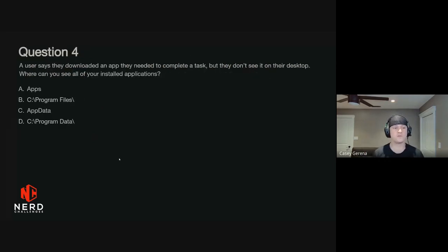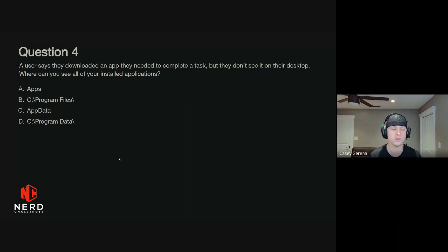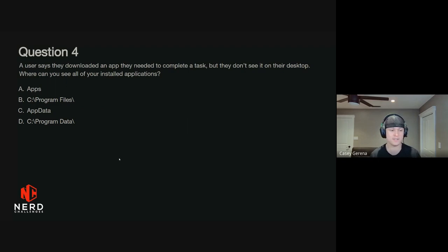Question four. A user says they downloaded an app they needed to complete a task, but they don't see it on their desktop. Where can you see all of your installed applications? Is it A, Apps? B, Program Files? C, AppData? Or D, Program Data?